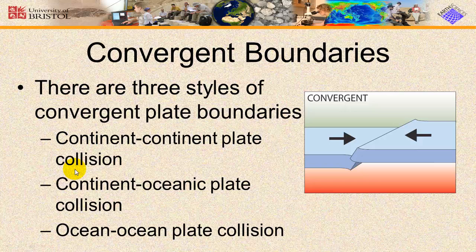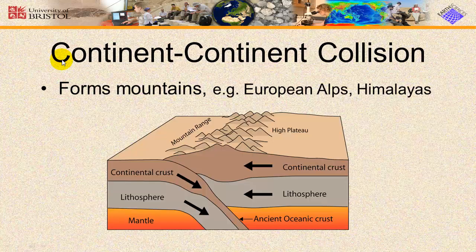The next type of boundary is a convergent boundary, and there are three types: continent-to-continent plate collisions, continent-to-oceanic plate collisions, and ocean-to-ocean plate collisions. So we're going to talk about each one of these.